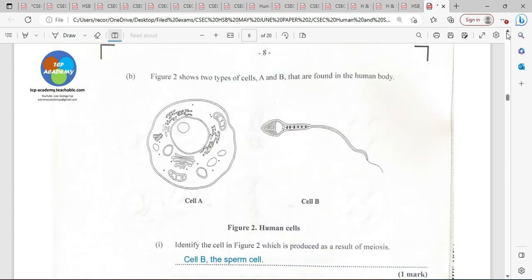Figure two shows two types of cells, A and B, that are found in the human body. A seems to be an animal cell, and of course, cell B seems to be the sperm cell. Of course, this would have pretty much shown us the somatic cell in A, while in B, it is showing an autosomal cell.